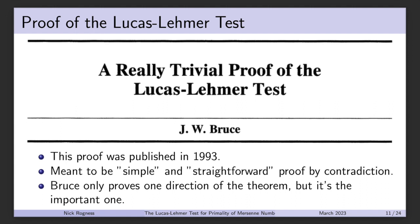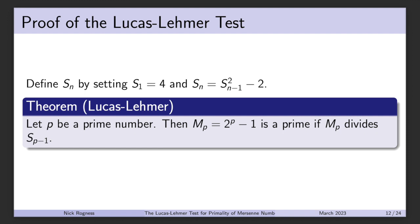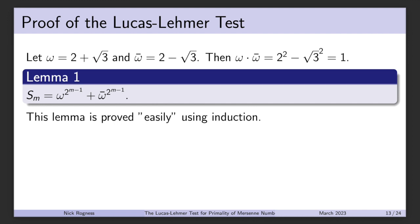The theorem being proved is: let P be a prime number. Then M_P = 2^P minus 1 is prime if M_P divides s sub (P minus 1). Note that Bruce indexes his sequence starting at s_1 instead of s_0. We begin by defining omega = 2 + sqrt(3) and omega-bar = 2 minus sqrt(3), and we can verify that omega times omega-bar equals 1. Lemma 1 states that the mth term of the Lucas-Lehmer sequence equals omega^(2^m) plus omega-bar^(2^m), proved by induction.